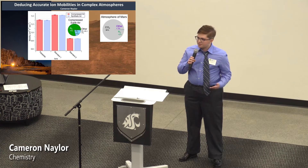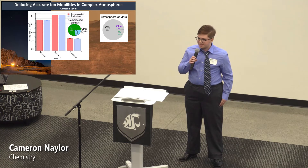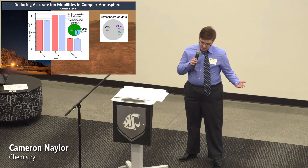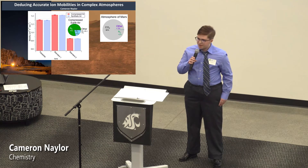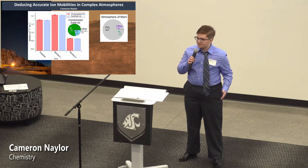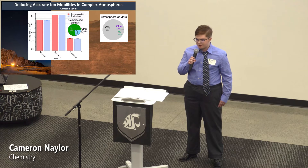For example, Mars' atmosphere is comprised of 96% carbon dioxide, while Io's is primarily sulfur dioxide. On the other hand, Earth's atmosphere is mostly nitrogen and oxygen, so any functioning instrument that utilizes the gas phase as a measurement medium must be flexible.